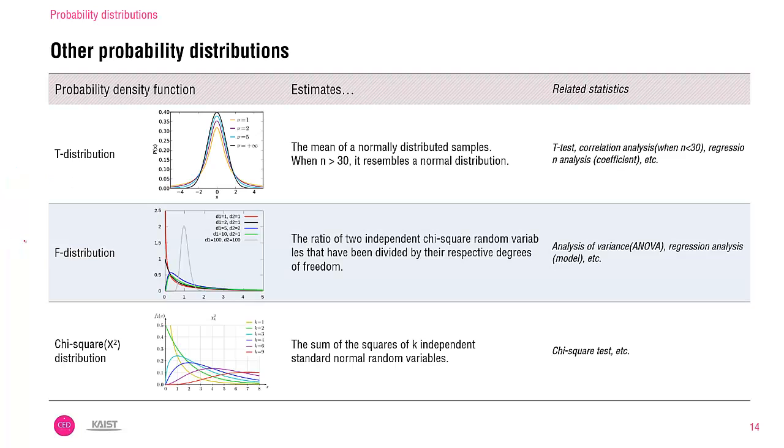In addition to the normal distribution, the other three probability distributions are summarized here. Differently from the normal distribution, you see here that each distribution has more than one line. This means that the distribution varies depending on something. In case of a t-distribution, it is the distribution of a mean of normally distributed samples. When the size of a sample is larger than thirty, the t-distribution resembles the normal distribution. So when this something, this is actually degree of freedom, is increasing, then the line is getting closer to the normal distribution. The black line is actually the normal distribution.